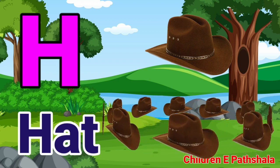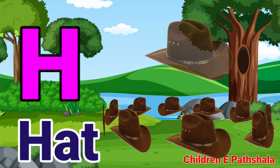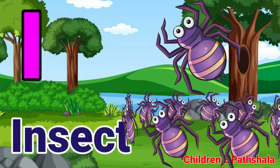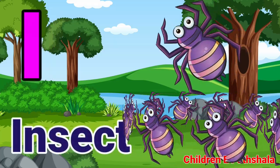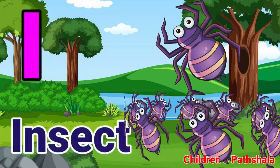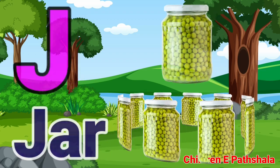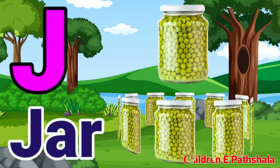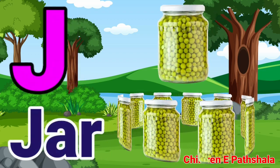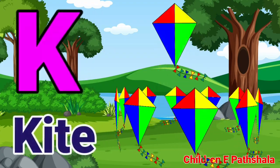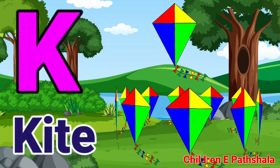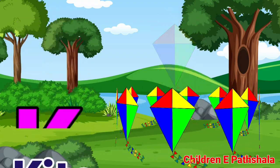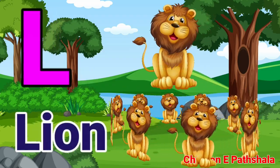I for Insect, J for Jar, K for Kite, L for Lion.